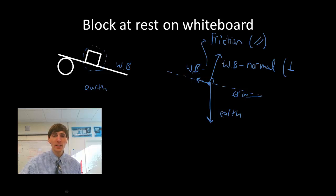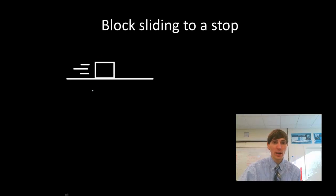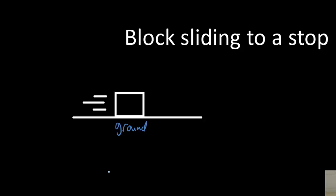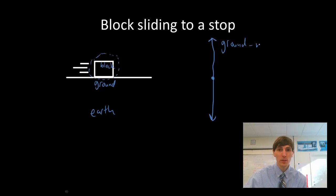We have one more example — I'll save components for the next video. The last one: a block sliding to a stop. We have our ground here, which is part of the earth, and here's our block. We're going to assume air resistance is negligible and that this is a friction-full, not frictionless, surface. I'm going to draw my force diagram: the earth is pulling it down, the ground is pushing it back up, keeping it supported — we call that our normal force.